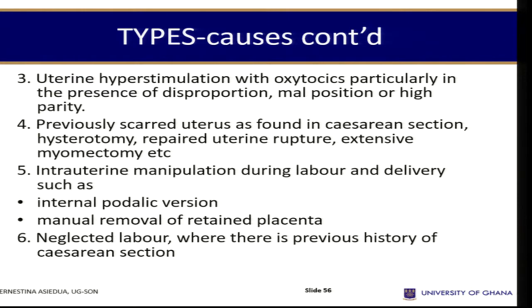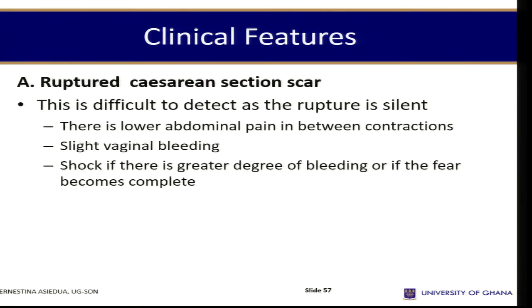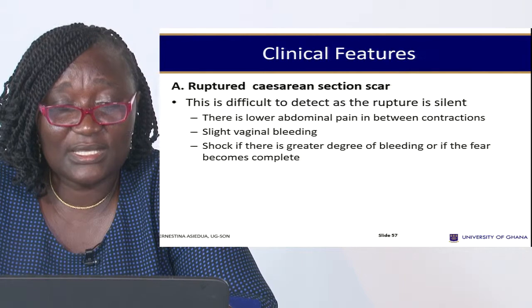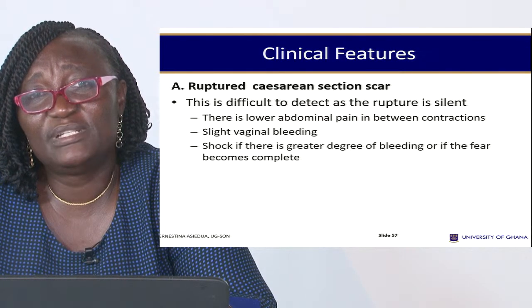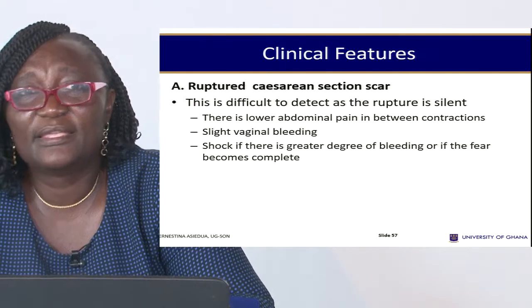Internal podalic version is now outdated in current obstetric practice. Neglected labour where there is a previous history of caesarean section and labour is not monitored closely can also lead to rupture. A ruptured caesarean section scar is difficult to detect as the rupture is silent — it may not be visible on the skin but occurs in deeper layers. Signs include lower abdominal pain between contractions and possible shock if there is significant bleeding or the tear becomes complete.